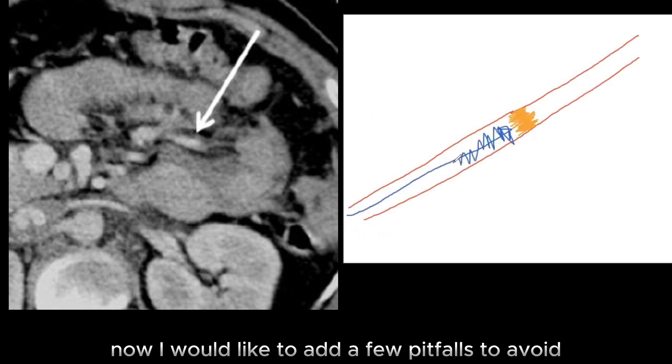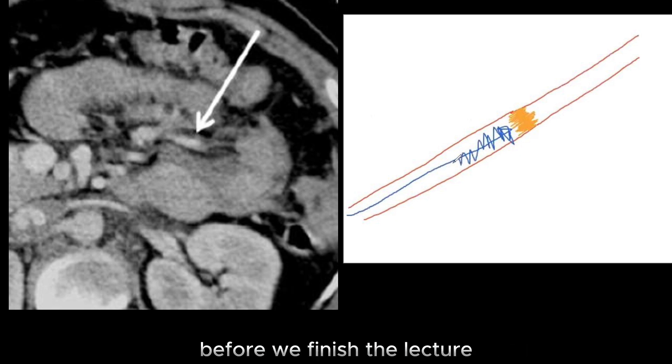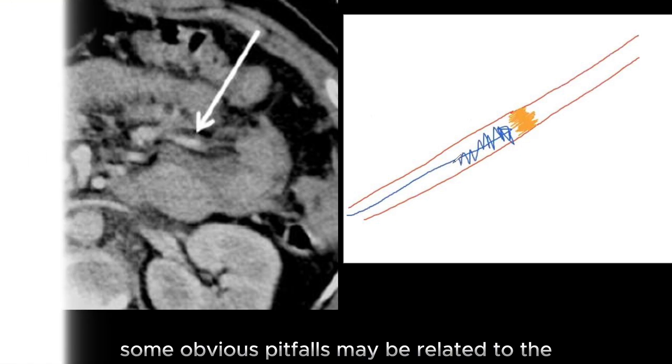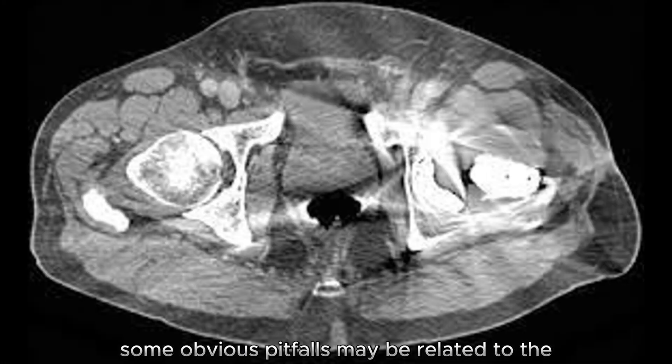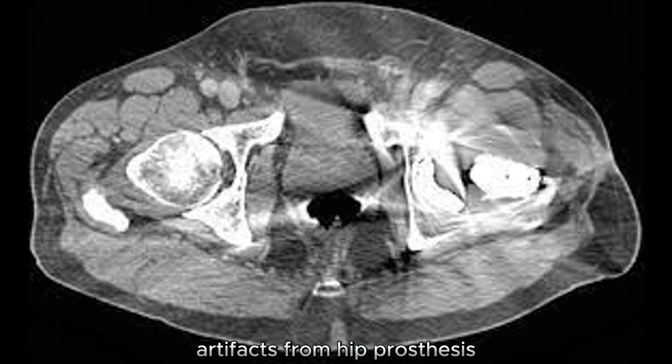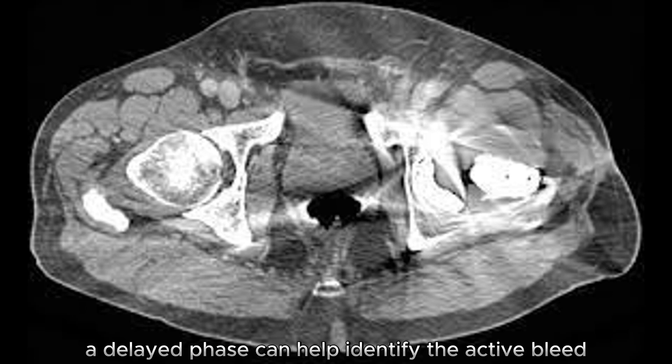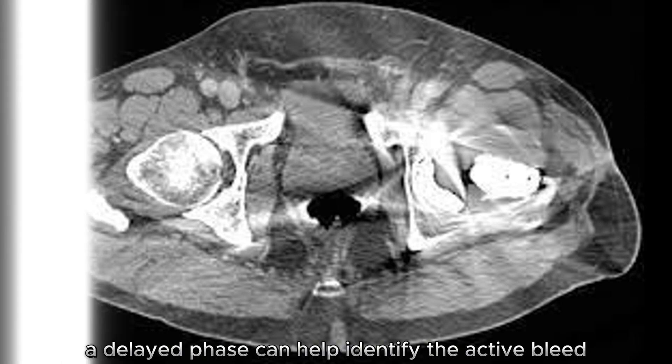Now I would like to add a few pitfalls to avoid before we finish the lecture. Some obvious pitfalls may be related to artifacts from hip prostheses, and in these cases a delayed phase can help identify the active bleed.